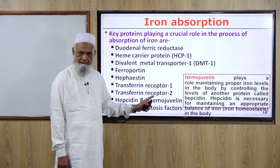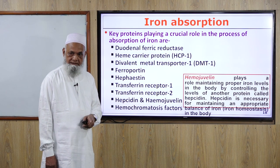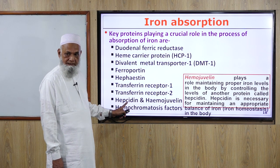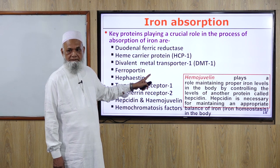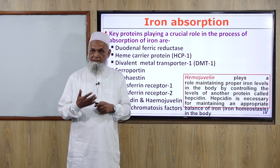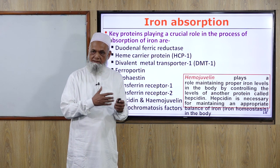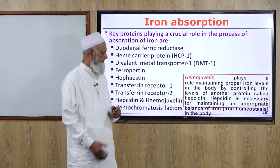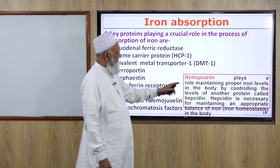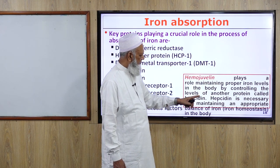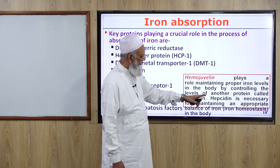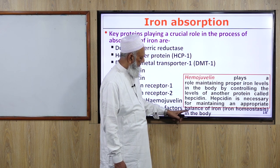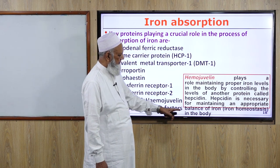Hemojuvelin is the gene and protein at the heart of iron regulation. Hepcidin is a protein produced by the liver. Hepcidin plays a role in maintaining proper iron levels in the body, and is necessary for maintaining appropriate iron homeostasis.